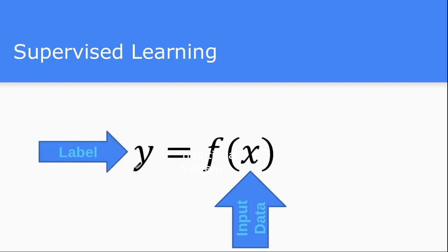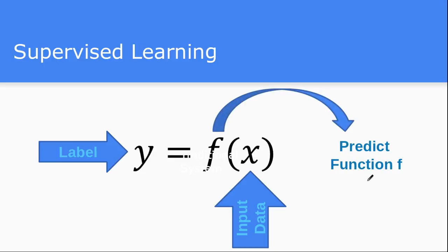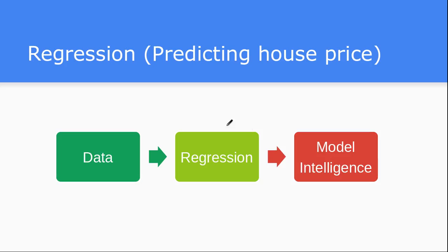The problem in supervised learning is that our task is to predict the function f. You have been given the input data x and the label output data y, and your task is to find this predicted function f. Let us try to understand this with the help of a very simple example.